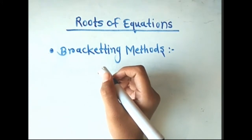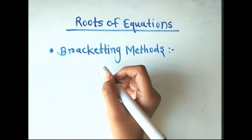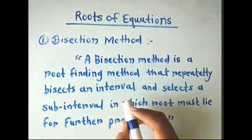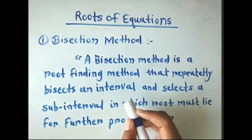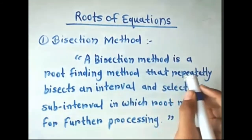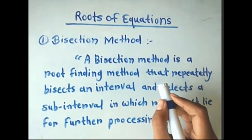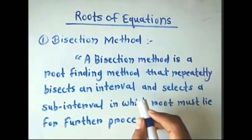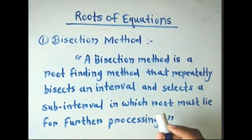These methods are based on assumptions. Bisection method and regula falsi method are well-known bracketing methods. First, we will see bisection method. A bisection method is a root-finding method that repeatedly bisects an interval and selects a sub-interval in which the root must lie for further processing.